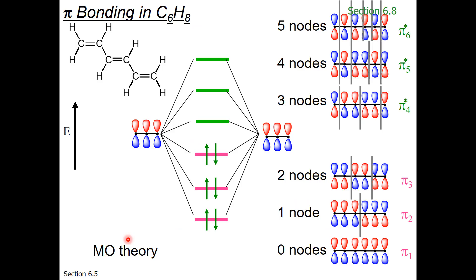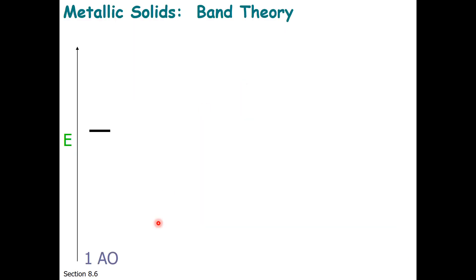In order to explain band theory, I'm going to remind you of molecular orbital theory. Band theory is like MO theory, but it's for metals. You may remember when combining unhybridized p orbitals, the mixture of molecular orbitals creates bonding and empty antibonding orbitals. Band theory is much the same.